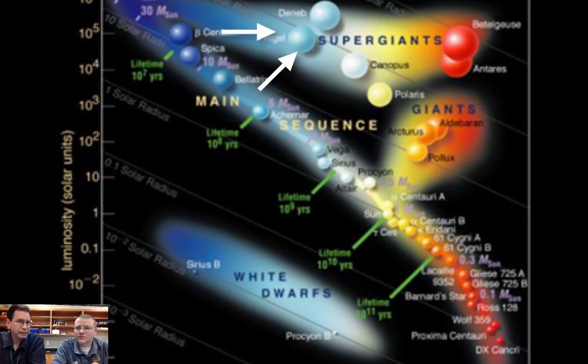Those are the blue supergiants like Rigel. So blue supergiants would be extremely bright and extremely hot.